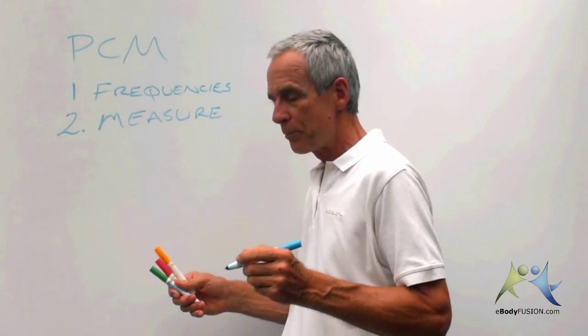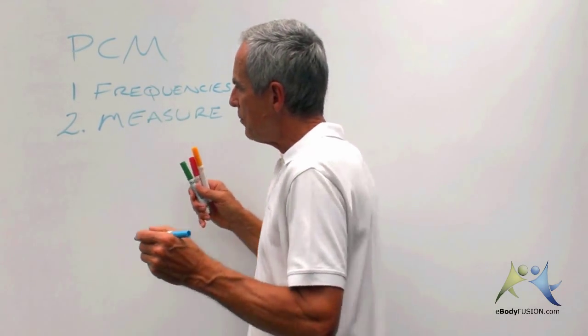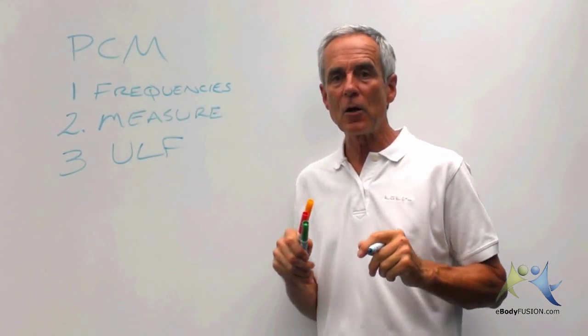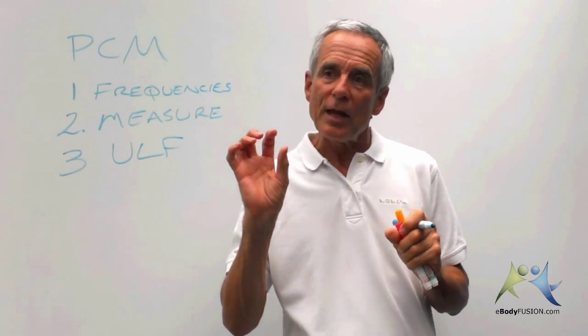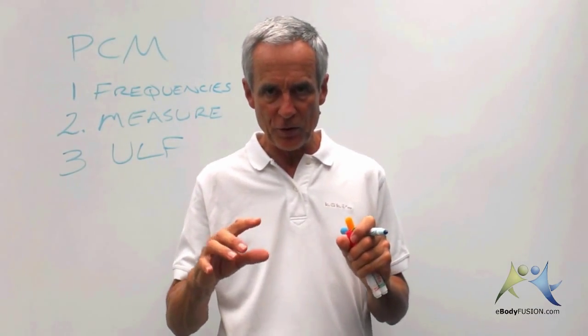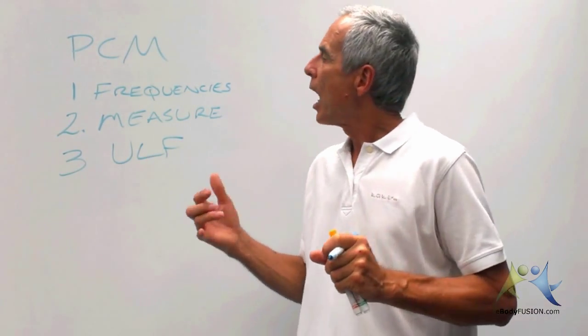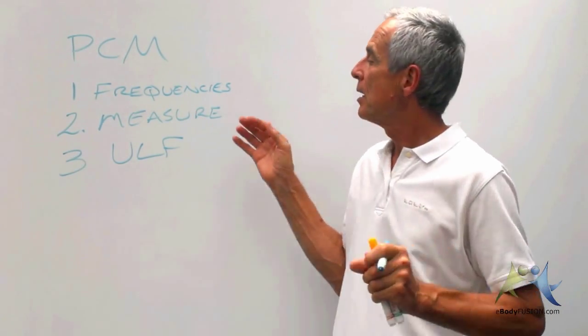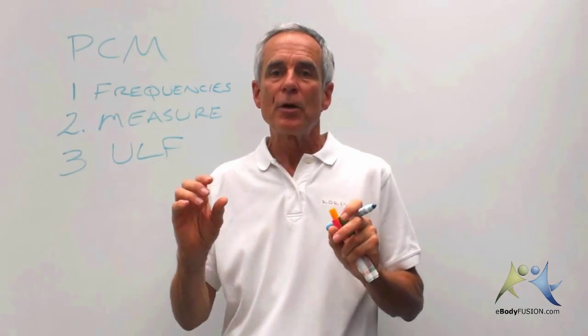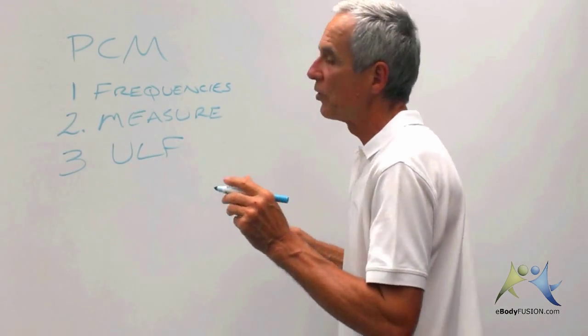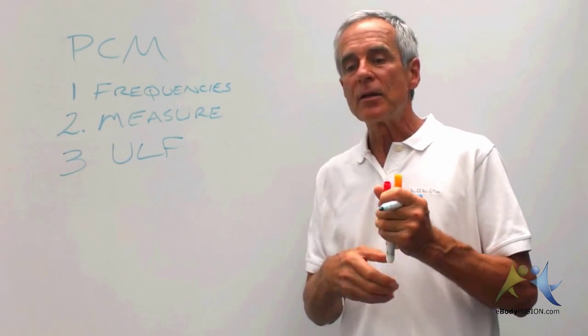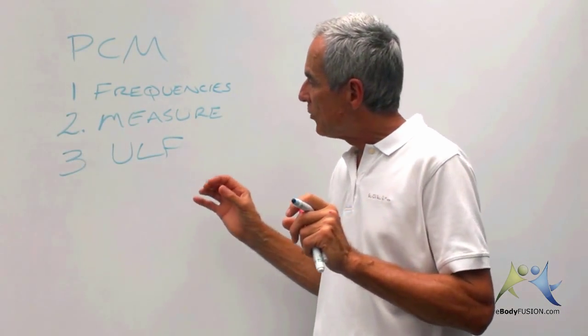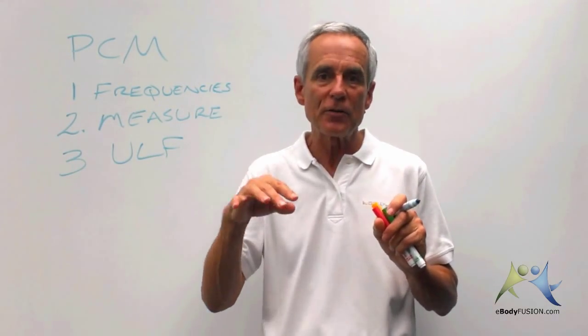The other big advantage of the PCM is that they introduced what we call the ULF, the ultra low frequencies. Now, what these do is that they resonate to the base frequencies of the different tissues. So after you've brought the energy up with these different frequencies and you know when you got there because you measured it, then you would apply the ULFs, which are in the range of 1 hertz to 9.9 hertz. They're all these very low frequencies with very wide, long wavelengths. And so they resonate to the different tissues in the body and there's a chart that you get in the manual with that.